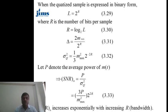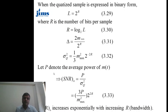Once the quantization noise is calculated, we can calculate the SNR — the signal to noise ratio — which is signal power divided by noise power. After substituting the values, we find that SNR increases exponentially with increasing R. Since the formula contains 2 to the power R, if P and Mmax are constant but we increase R — the number of bits — the SNR will improve.